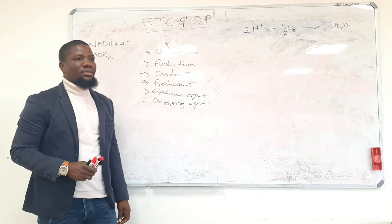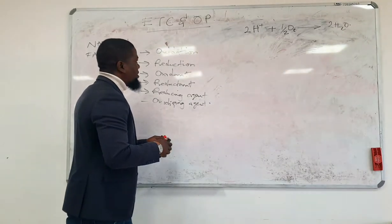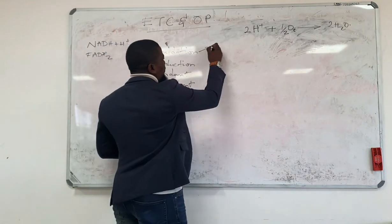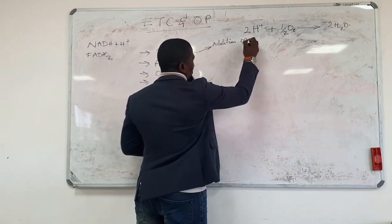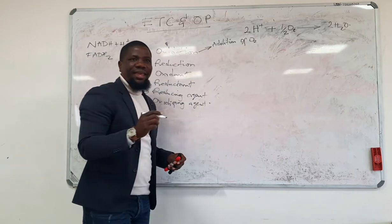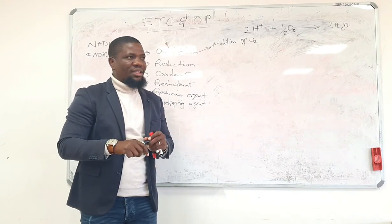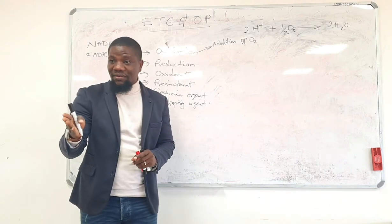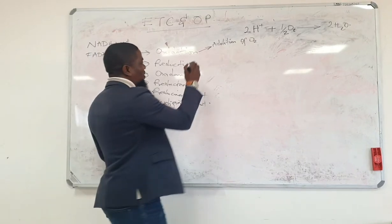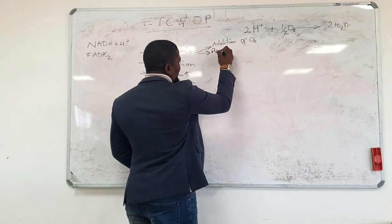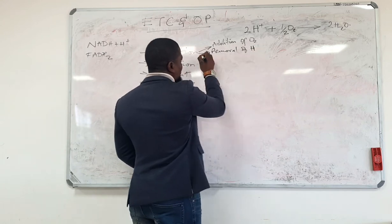Oxidation is an addition of oxygen. Correct — oxidation is addition of oxygen. Another definition: the removal of hydrogen is also oxidation. A loss of electrons is also oxidation.